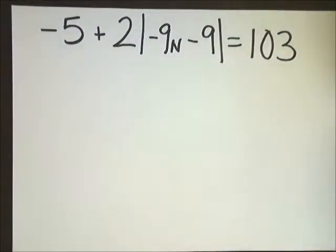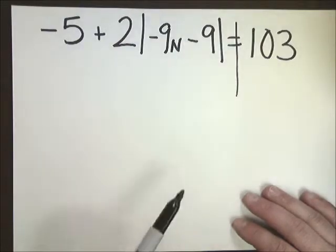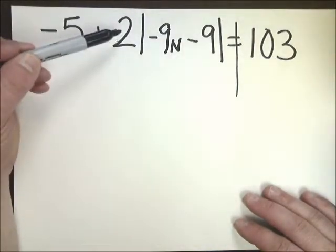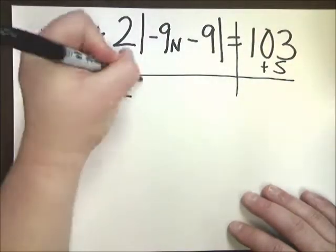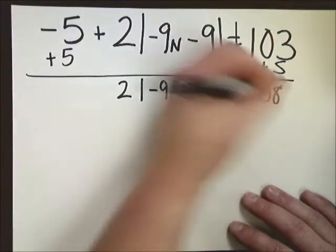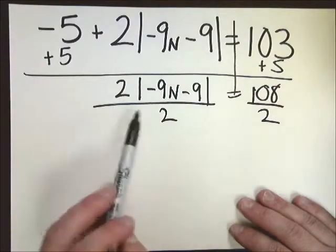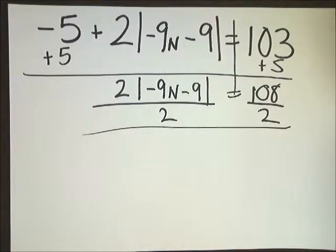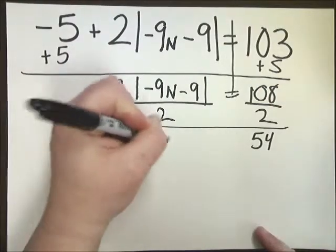Now, this one looks gigantic. It's really not that complicated. You just do the same thing you did before, except there's two steps before you get to the two steps. Draw the line. Now, here is my absolute value. We're going to treat that like x. So the thing that's furthest away from it is the negative 5. So to get rid of minus 5, I need to add 5. To the absolute value of negative 9n minus 9 equals 108. Now, from here, I need to divide by 2 because this absolute value is multiplied by 2. So when you have this, you break it down. You'll do 108 divided by 2, and you get 54 here.